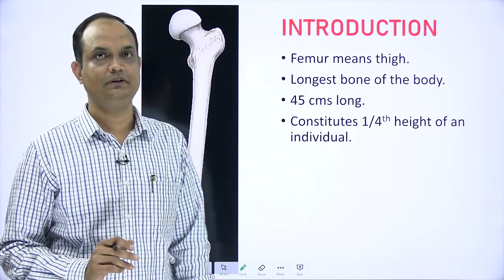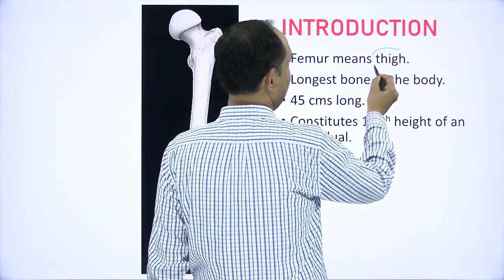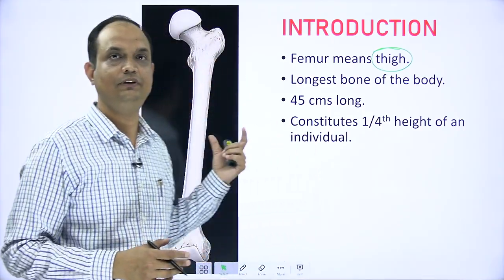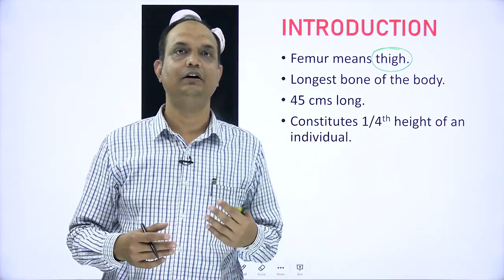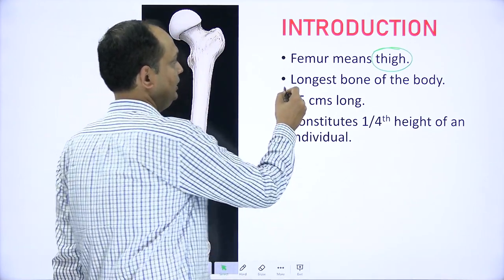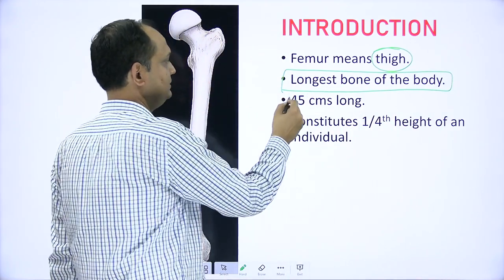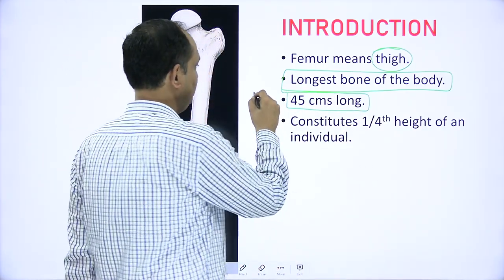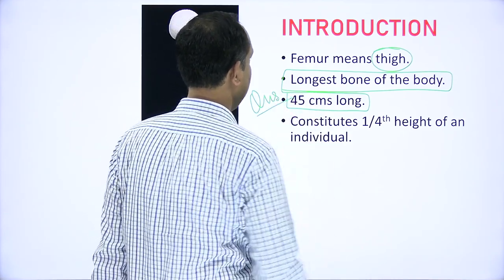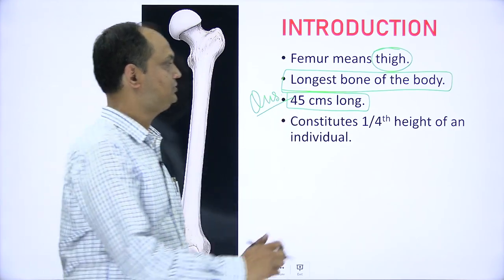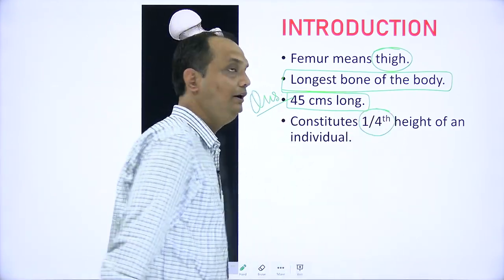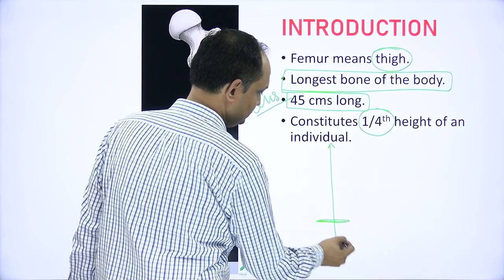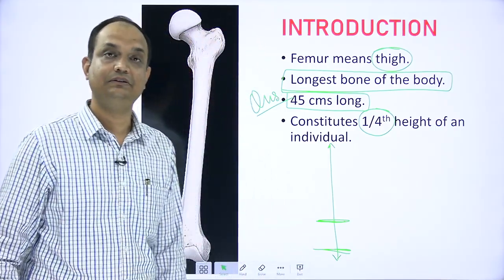Femur means thigh. Whenever we use the word femur, we are concerned with the thigh — the bone of the thigh is femur, the artery is femoral artery. This is the longest bone of the body, approximately 45 cm in length. This length constitutes one-fourth of the height of an individual.